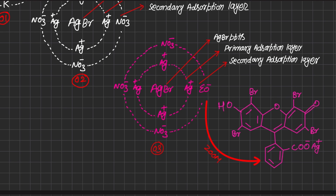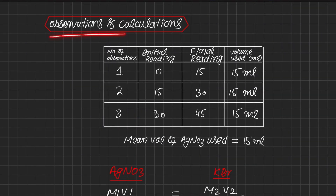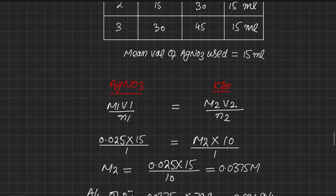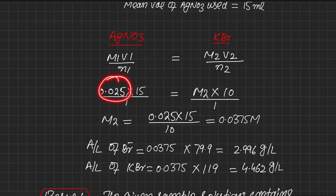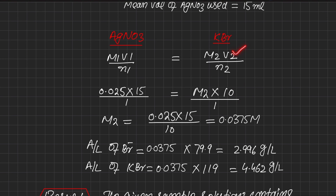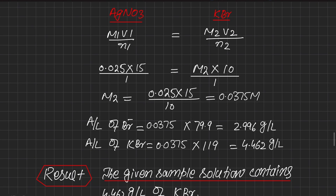Next is recording observations and doing calculations. We take three readings, and the mean volume of silver nitrate used from the burette is 15 ml. Using the molarity formula: M1 is 0.025 M for silver nitrate (given in the question); V1 is the volume of silver nitrate from the concordant readings; M2 is to be found; V2 is 10 ml (the volume of potassium bromide taken in the flask).